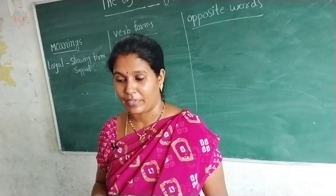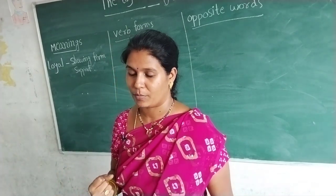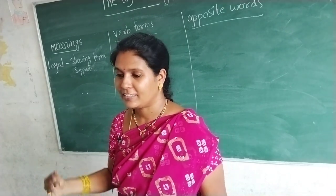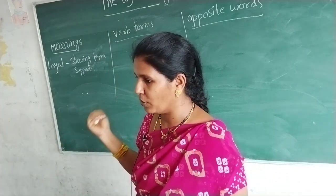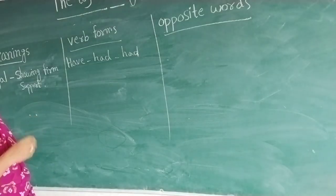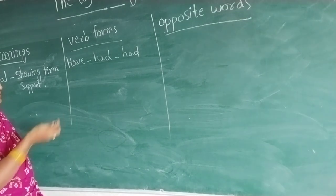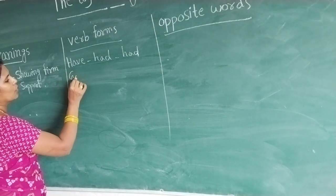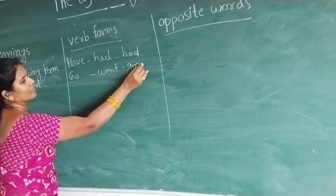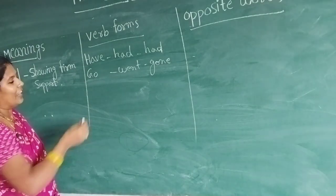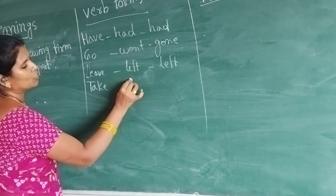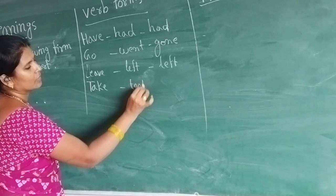They had a newborn baby — 'had' is an irregular verb form. What are the verb forms of 'have'? Have, had, had. Now I am going to write on the board. In this paragraph, one more irregular verb form is there: Go, went, gone. Next one: Leave, left, left. Take, took, taken.